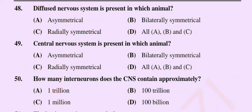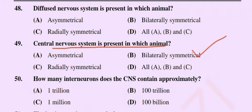Question number 49: Central nervous system is present in which animal? Option A: asymmetrical, option B: bilaterally symmetrical, option C: radially asymmetrical, option D: all of these. The correct option is option B: bilaterally symmetrical.